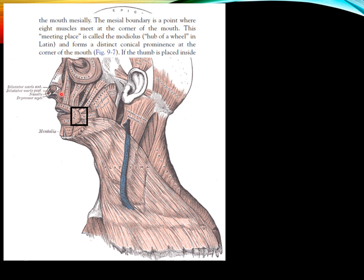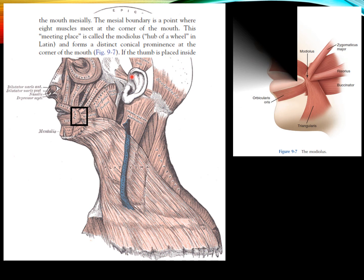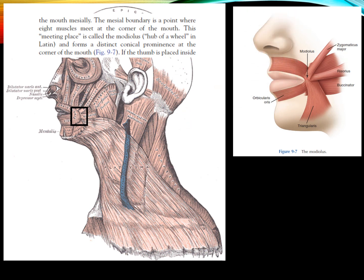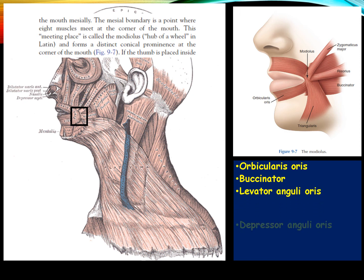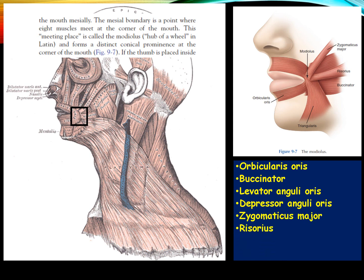Here is the point where the eight muscles meet — this is the modulus. These are the eight muscles which meet at the corner of the mouth, and that structure is called the modulus.